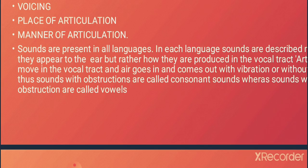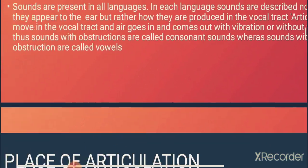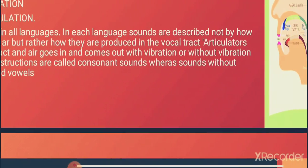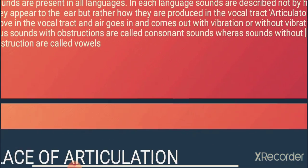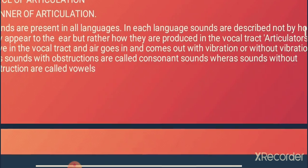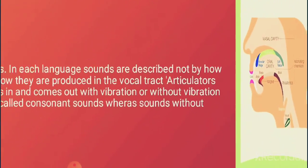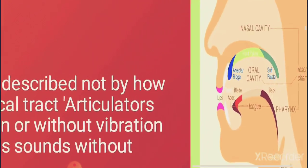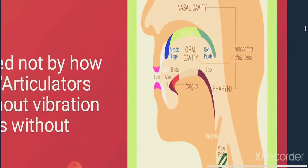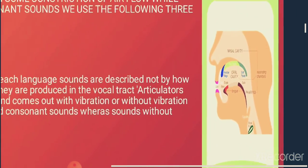Articulators move in the vocal tract and air goes in and comes out with vibration or without vibration. Thus, sounds with obstructions are called consonant sounds, whereas sounds without obstructions are called vowel sounds. You can see here the different articulators — the nasal cavity, oral cavity, and glottis — and within these cavities we have all the articulators involved in speech sound production.